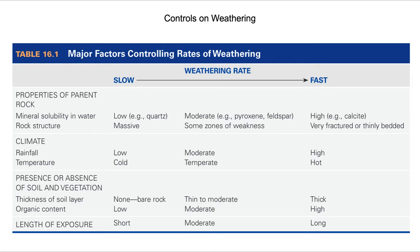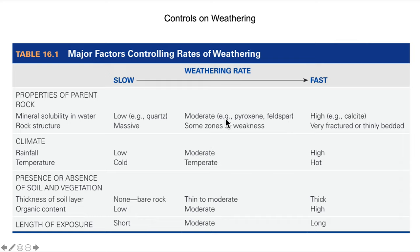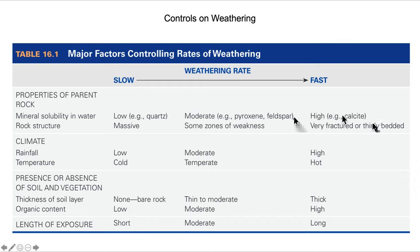In terms of weathering rates, we go from slow to fast. A slow weathering rate would be quartz — a large, massive piece of quartz. A moderate weathering rate includes minerals such as pyroxenes and feldspars, which form at higher temperatures than quartz and are thus less stable at earth's surface temperatures. Zones of weakness within a rock provide conduits for fluids and for freezing water in the case of physical weathering. Something that weathers fast would be calcite — relatively soluble, easily fractured, and can be thinly bedded as in limestone — all leading to greater surface area exposure to reactive substances like water.